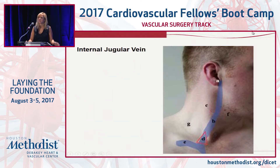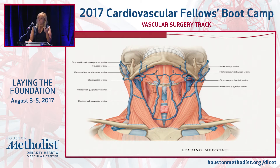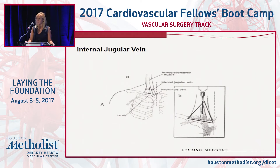The internal jugular vein runs the majority of its course directly posterior to the sternocleidomastoid muscle. At the insertion of the SCM muscle, there are two heads. By turning the head to the side, that opens up those two heads of the SCM muscle very nicely to expose a window, which allows you to gain access to the vein without having to tone a muscle — making this the ideal location to place a tunnel dialysis catheter.